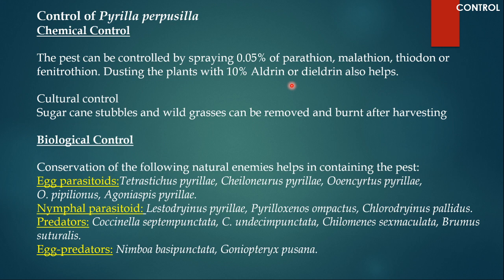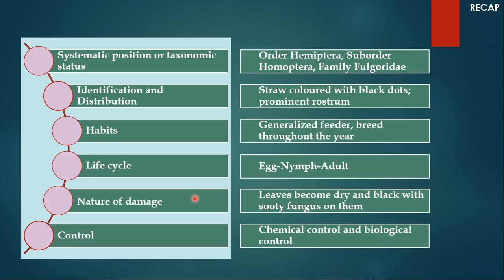For biological control, conservation of natural enemies helps in containing the pest. Naturally, there are quite a few enemies of Pyrilla purpusilla: egg parasitoids, nymphal parasitoids, and egg, nymphal, or adult predators. If these insects are present, Pyrilla purpusilla can be kept under check.